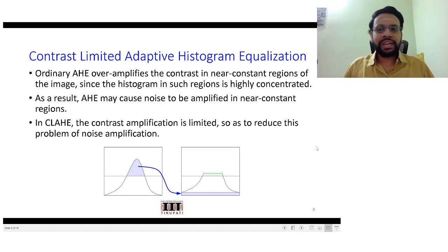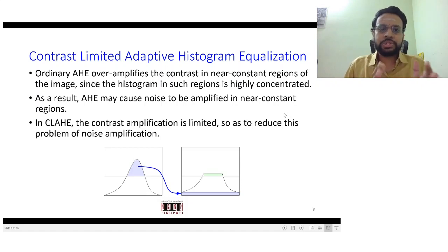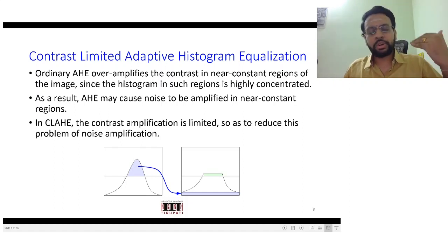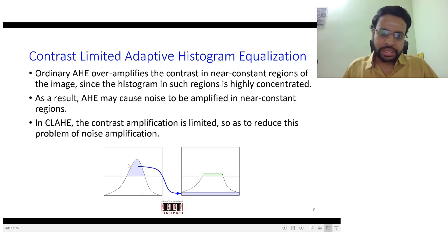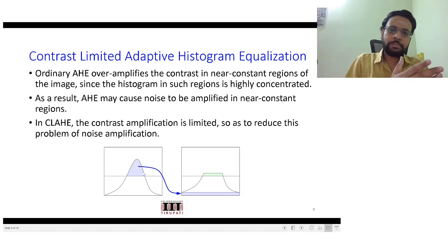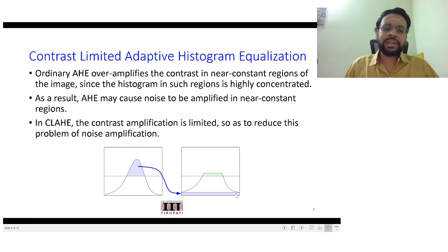So in practice, in addition to adaptive histogram equalization, it is quite common to do one more modification, referred to as contrast limited adaptive histogram equalization. You take an upper cap on the maximum value in your PDF and clip it there. Whatever exceeds this value is clipped to that value. To convert it back into a PDF, you uniformly distribute those clipped values across all intensity values.